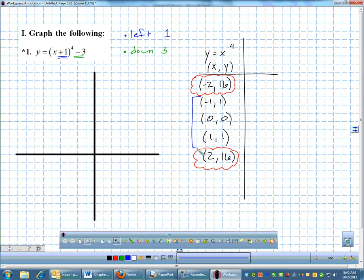So I'm going to graph these three. Negative 1, 1, negative 1, 1. That would go left 1 and down 3. 0, 0 at the origin, I'll go left 1, down 3. 1, 1. I'll go left 1, down 3. And I have these three points.